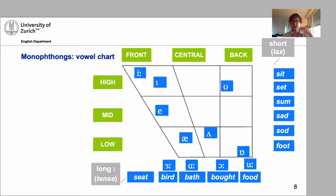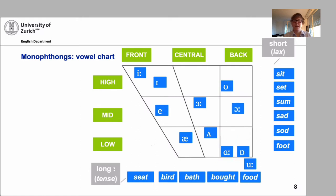'Bird' is quite relaxed — a central vowel. 'Bath,' at least in RP English, is very low and very back. 'Bought' is slightly further up. Then 'food' — the U vowel — is high back. There's a mirror situation with the E and U sounds: the longer vowel tends to be more extreme, further to the top and further to the back or front, compared to its short counterpart.